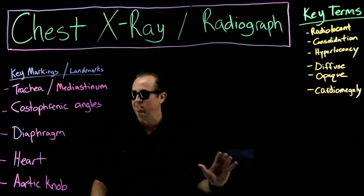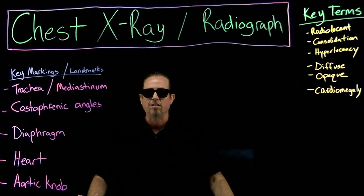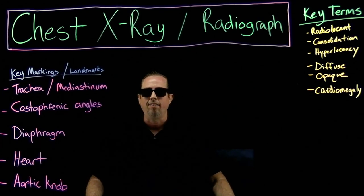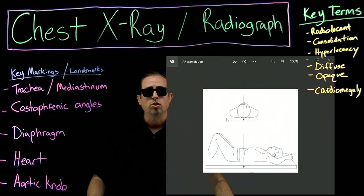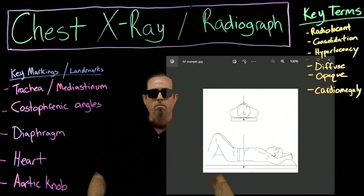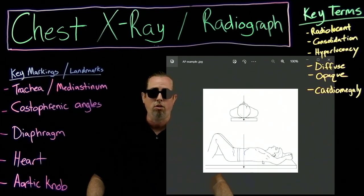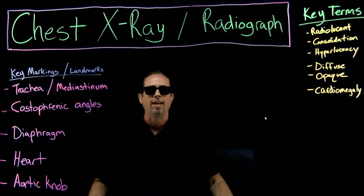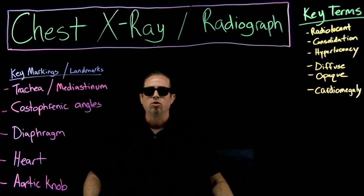The most common radiograph projection — the way they shoot the film of the chest to evaluate the lungs and heart, cardiopulmonary — is the AP, which stands for anterior-posterior. In this projection, the patient is in a standing position shooting midline straight down the center, with their back against the wall, or lying flat with the shot going straight down through the bed.